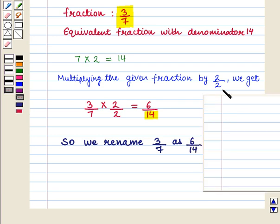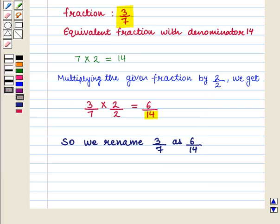We should note that the fraction 2 by 2 is equal to 1. So it does not change the given fraction when it is multiplied by 2 by 2. Thus we say it is identity property of multiplication method of writing equivalent fractions.